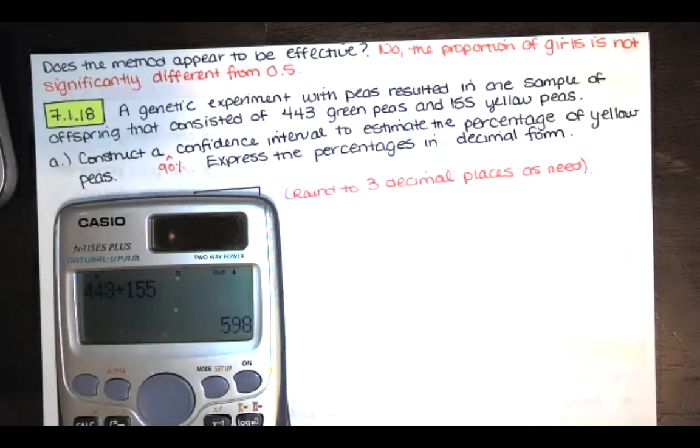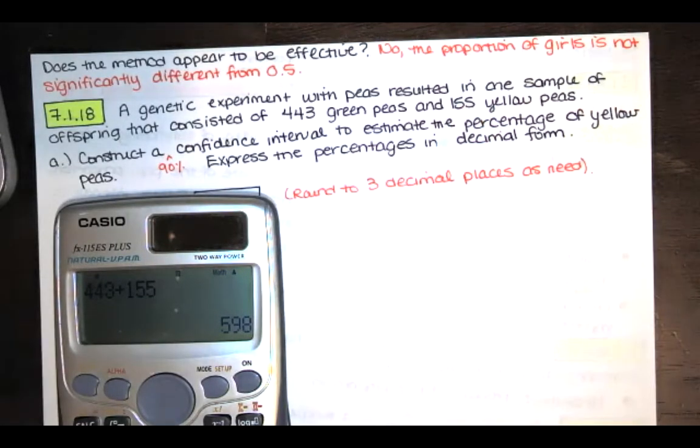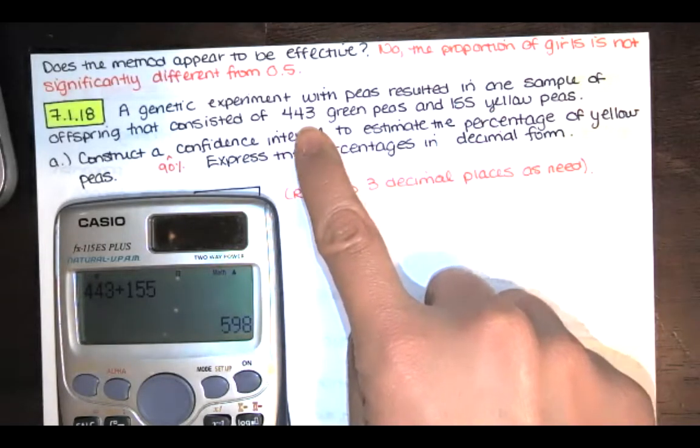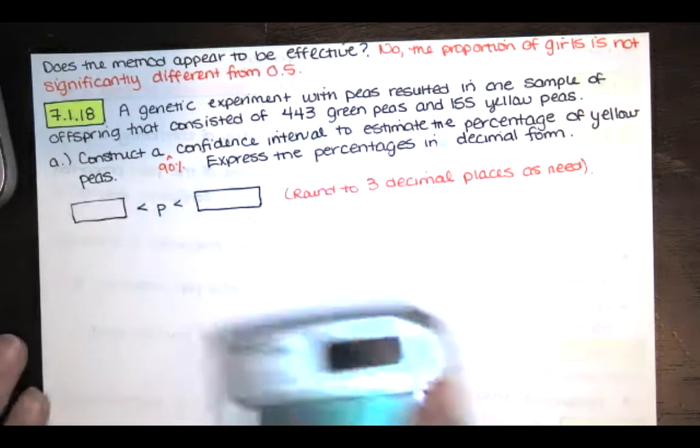It seems to be a simple random sample. And there are at least five successes and at least five failures. Well, 155 yellow peas is 155 successes. 443 green peas can be considered 443 failures. So that means that a normal distribution is a suitable approximation to the binomial distribution here.